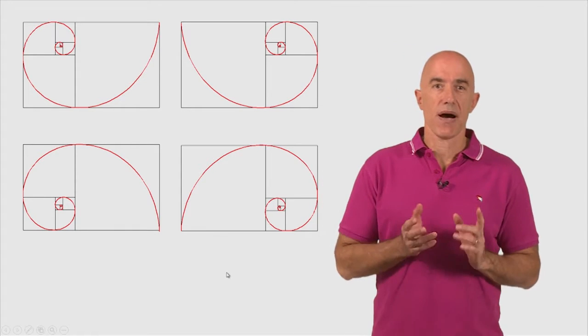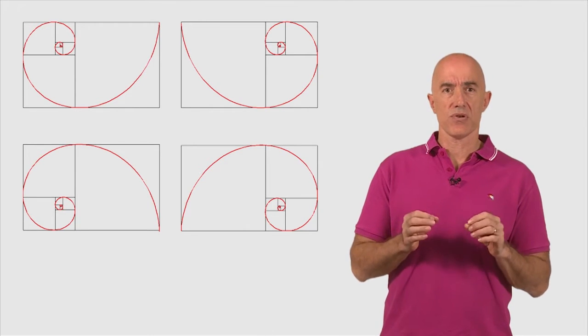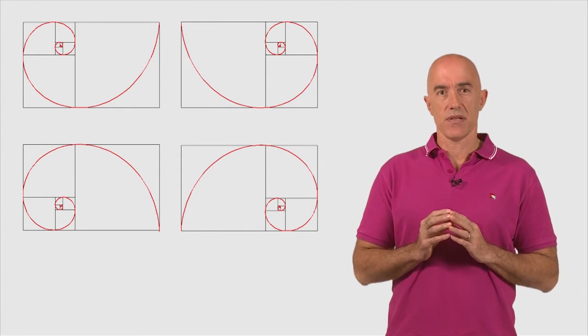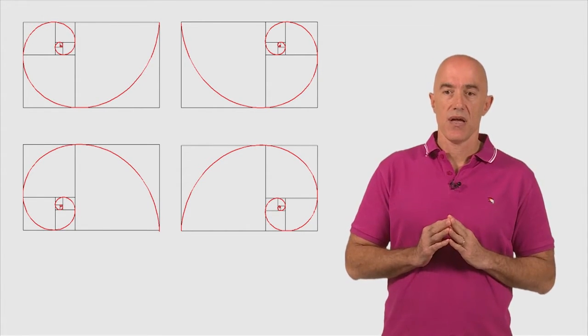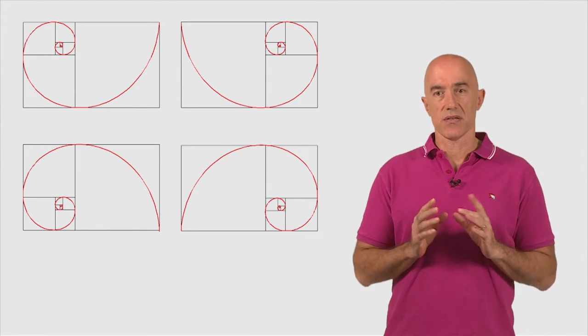So we have four possible centers, four possible starting points for these golden spirals, four possible accumulation points of the spiraling squares.